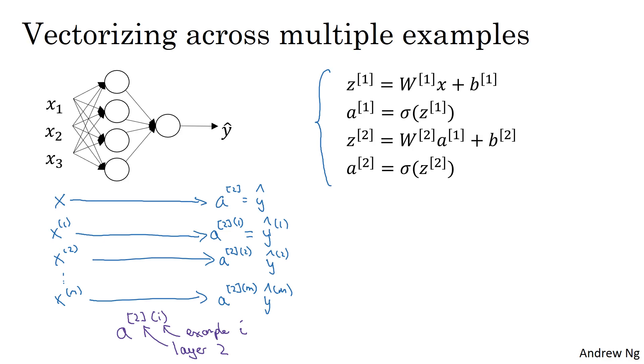And so this suggests that if you have an un-vectorized implementation and want to compute the predictions for all your training examples, you need to do for i equals 1 to m. Then basically implement these four equations, right? So you need z1i equals w1 xi plus b1, a1i equals sigmoid of z1i.